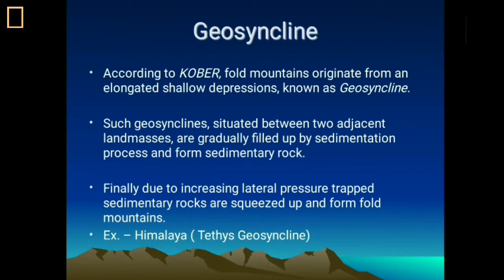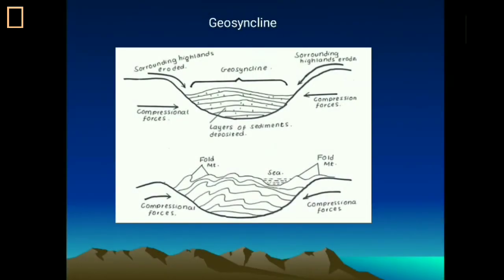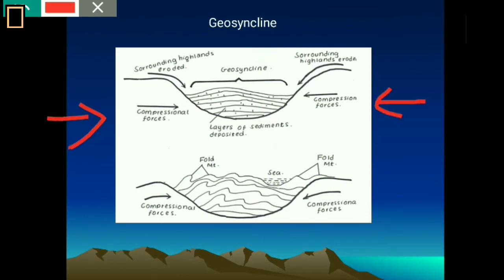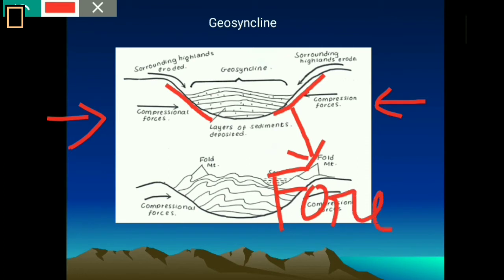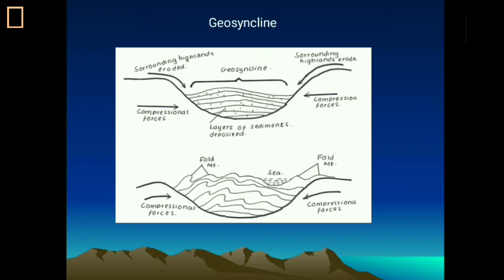The most important example of a geosyncline is the Himalaya, which originated from the Tethys geosyncline. Looking at the diagram, two compressional forces come from either side — the lateral forces. The surrounding highlands are eroded and sediments are deposited in the concave downward part, the geosyncline. The two adjacent parts of the landmass — the highlands — are known as the foreland. As compressional pressure increases, the sedimentary rocks, being soft, get folded. You can see both anticlines and synclines in the diagram, and they together form the fold mountains.